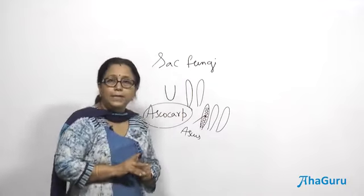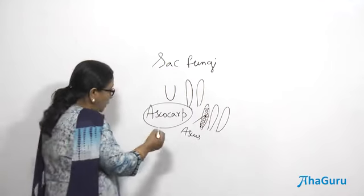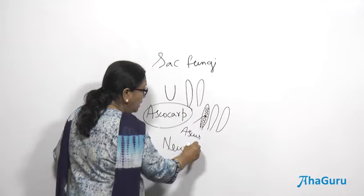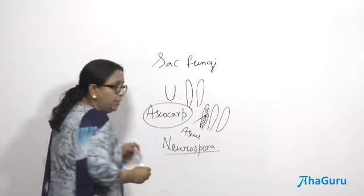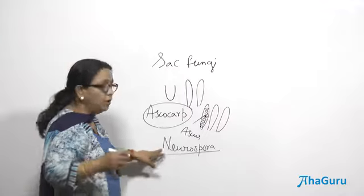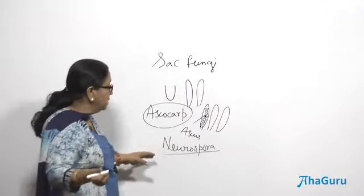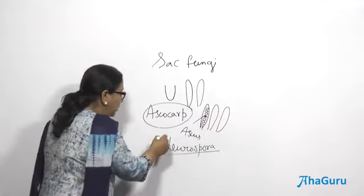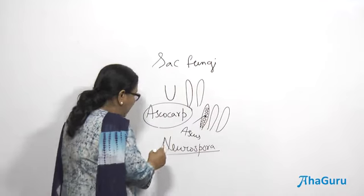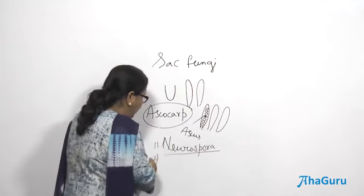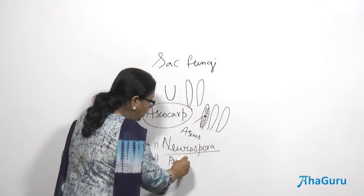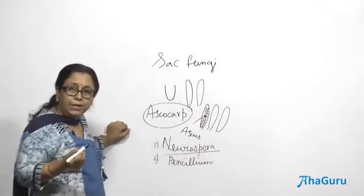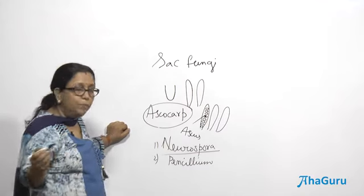Examples of ascomycetes include Neurospora, which is one of the most important organisms in genetics and was used extensively in genetic experiments. It is sometimes called the Drosophila of the plant kingdom because so much experimentation was done with it. Another example is Penicillium, which produces the antibiotic penicillin, very effective against gram-positive bacteria.